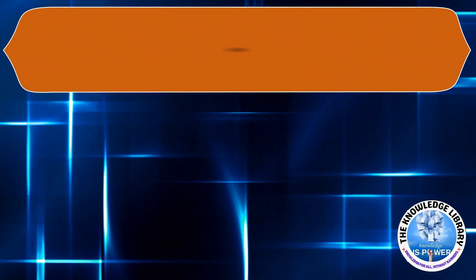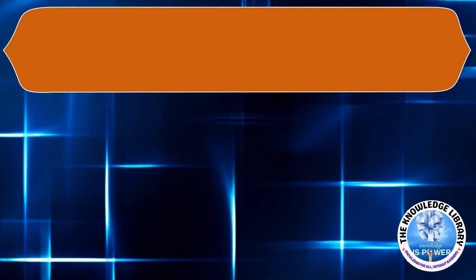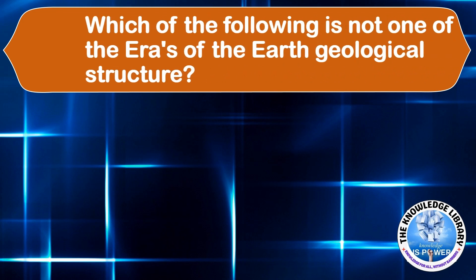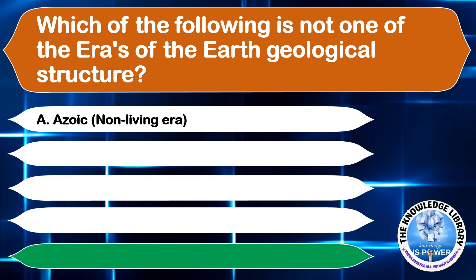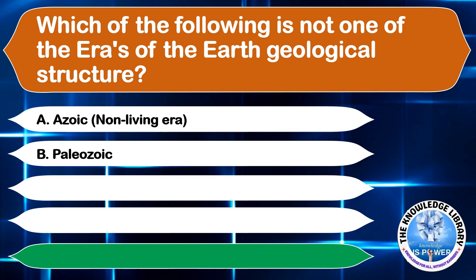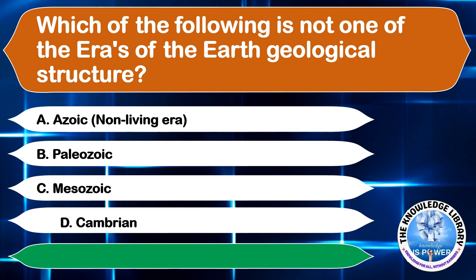Which of the following is not one of the eras of the Earth's geological structure? A. Azoic, B. Paleozoic, C. Mesozoic, or D. Cambrian. The correct answer is option D, Cambrian.